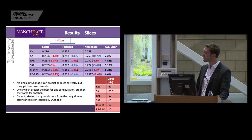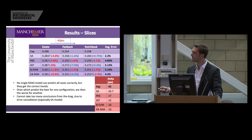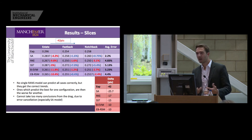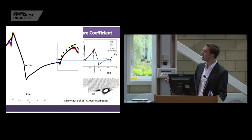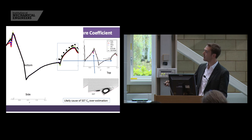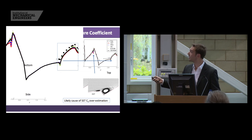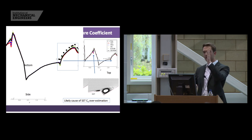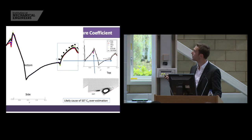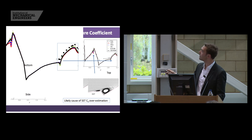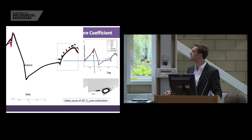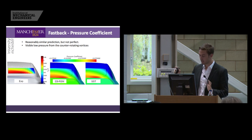The Spalart-Allmaras model gets reasonably close but is still maybe 50% off. The problem with looking at drag is error cancellation — it's not clear where the model is doing well or poorly. Looking at the CP, one interesting issue is that the models don't capture the CP correctly on the top and bottom of the car for the fastback. I noticed other people's results show the same problem — possibly because the car is mounted using a strut from the top of the tunnel. The SST over-predicts drag and shows some strange flow behavior, but in general these models don't do too badly on the fastback configuration.